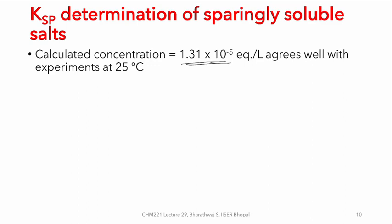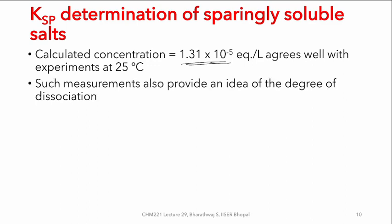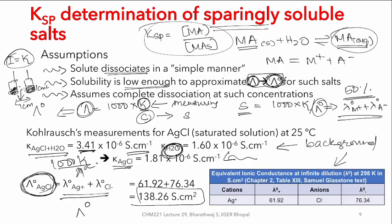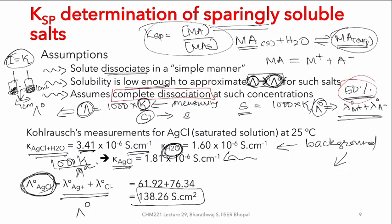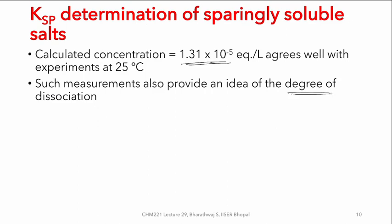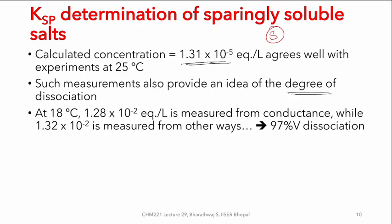This agrees very well with measurements done by Kohlrausch at 25°C by other independent methods. Such measurements also provide an idea of the degree of dissociation. A moment earlier I said degree of dissociation is assumed to be complete — 100% dissociation. On the other hand, if you have near-100% dissociation, measuring sparingly solubility using both the conductance method and some other method helps decipher the actual degree of dissociation.